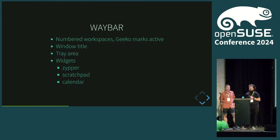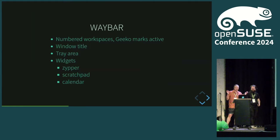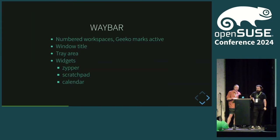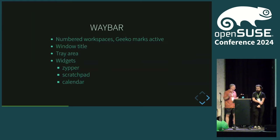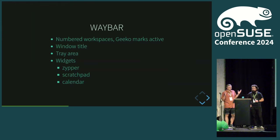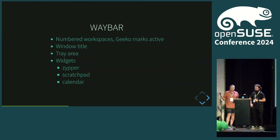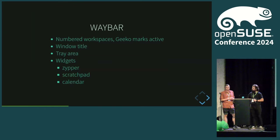We use Waybar, which is the status bar where you can see your workspaces, scratchpad, time, and everything you want to customize. It comes with preloaded widgets — like Zypper, for example, which shows how many packages are not updated. In Tumbleweed you always have some. There's also a calendar, tray area, and window title. You can click on items if you prefer using the mouse. It's a standard bar, but customized for OpenSUSE with the OpenSUSE style.